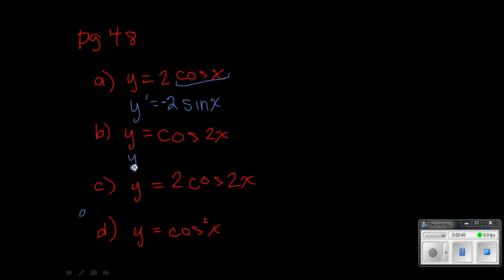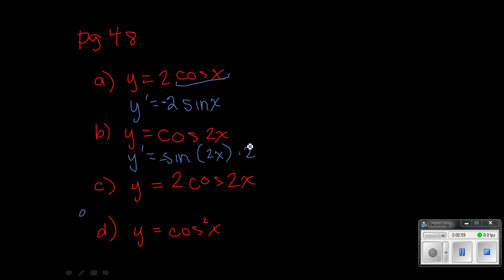On the second one we have to use the chain rule. So we start by taking the derivative of cosine, which is negative sine — keep the angle the same. And then now we're going to take the derivative of the inside, which is the 2x. So the derivative of 2x is just 2.